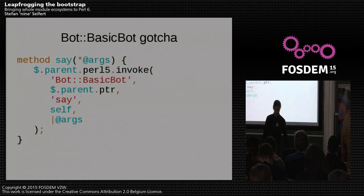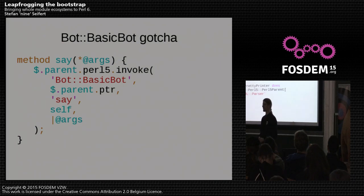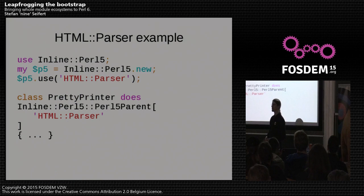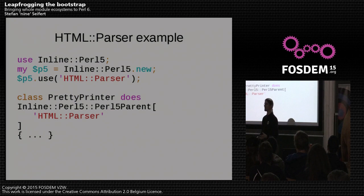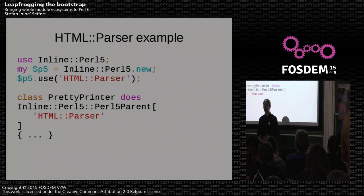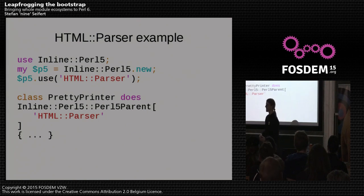Let's look at another example. Using HTML::Parser looks really just like the Bot::BasicBot example — we again use the Perl5::Parent role to subclass it in Perl 6. Now, if you've used HTML::Parser before, you might point out that we don't actually have to subclass to use it; you can also pass in code references to implement the behavior, and Inline::Perl5 would actually support this.